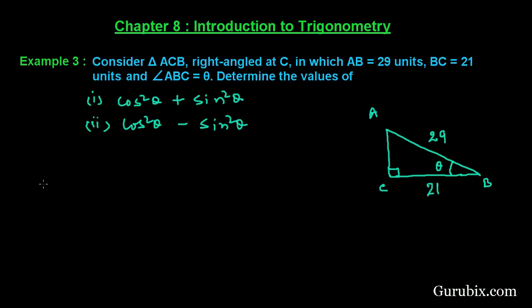Welcome friends. Let us solve example number 3 of chapter 8. The example says: consider triangle ABC right angled at C, in which AB is given 29 units, BC is 21 units, and angle ABC is given as theta. We have to determine the values of cos squared theta plus sin squared theta, and cos squared theta minus sin squared theta.